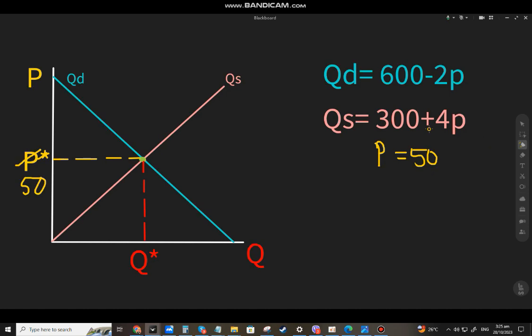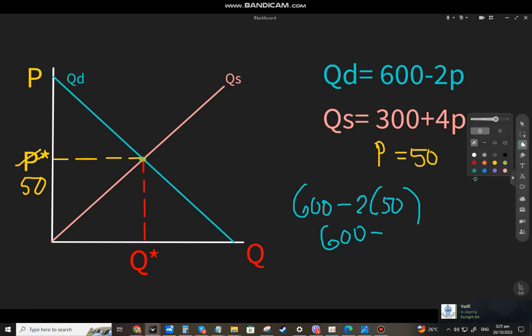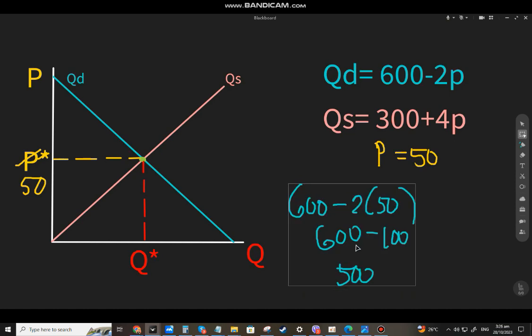For Qd, that will be 600 minus 2 times 50, which equals 600 minus 100, giving us 500.